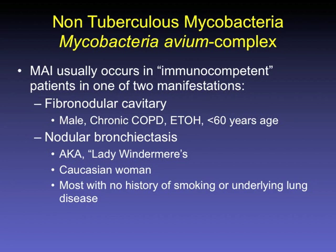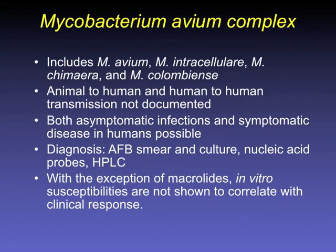For MAC or MAI, there is fibronodular and nodular bronchiectatic disease. An important point to remember: with the exception of macrolides, in vitro susceptibilities to MAC are not shown to correlate with clinical response. That's why you will never see a susceptibility panel to MAC from the lab except for macrolides — all the other drugs don't correlate. You look at macrolide susceptibility, take that into account, and treat with the standard regimen. Susceptibilities to rifampin, rifabutin, or ethambutol really don't matter with MAC.